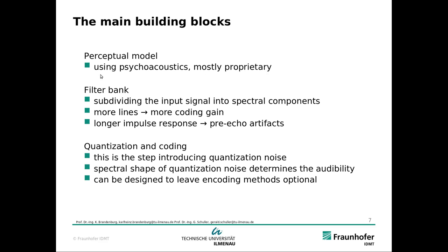The main building blocks are the perceptual model using psychoacoustics, which is mostly proprietary — it just controls the quantization and that is up to the encoder how to do it. The filter bank subdivides the input signal into spectral components. More subbands or more lines means more coding gain, and the longer the impulse response the more we are in danger of pre-echo artifacts, which is why we need switching. Quantization and coding introduces quantization noise, and the spectral shape of the quantization noise determines the audibility of it. That is why we need psychoacoustics to optimally hide the quantization noise from the ear.